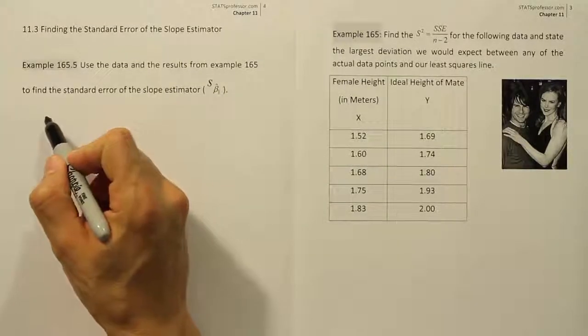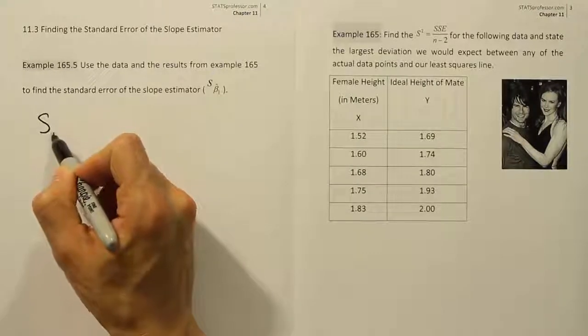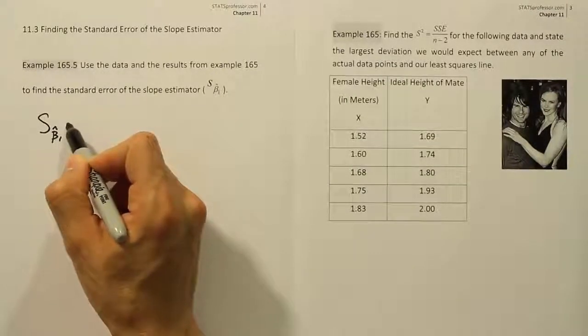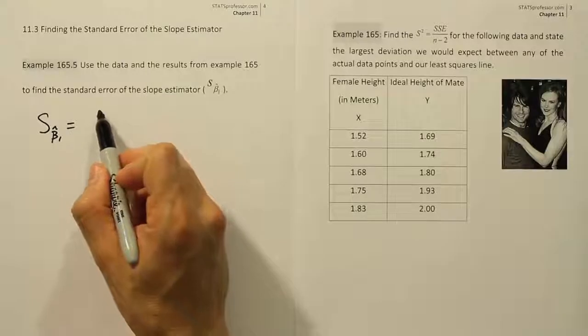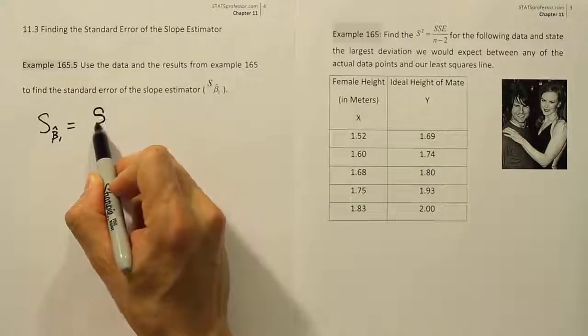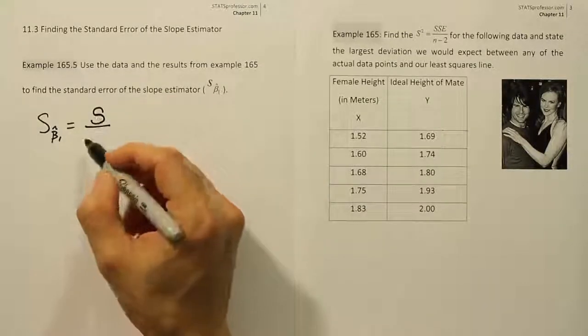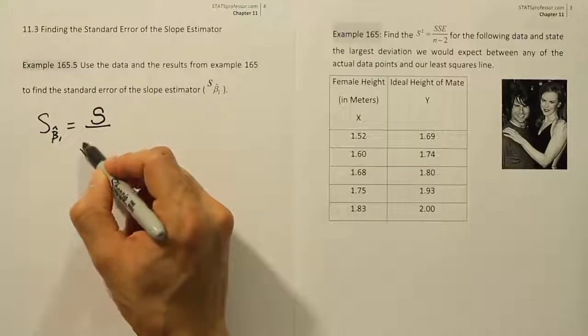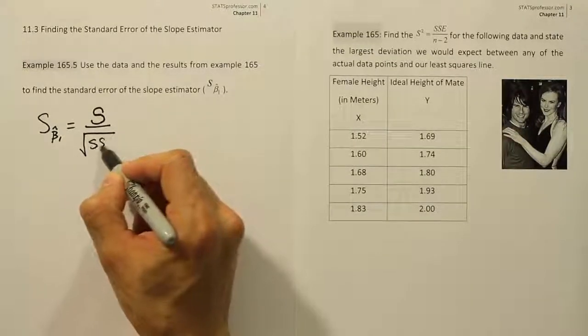To estimate that standard error we use this guy s beta 1 hat and the formula is pretty straightforward. It's going to be the s value that we calculated from 165 and we're going to divide it by the square root of the sum of squares for the x values.